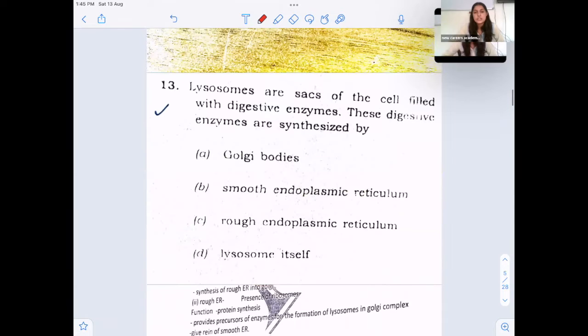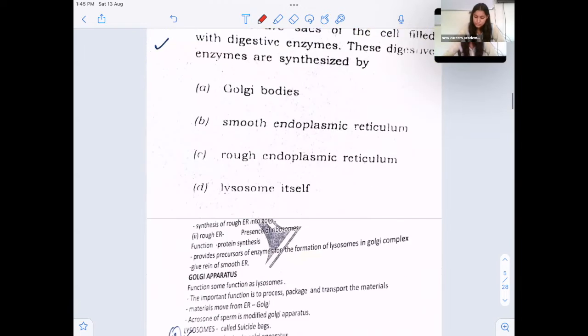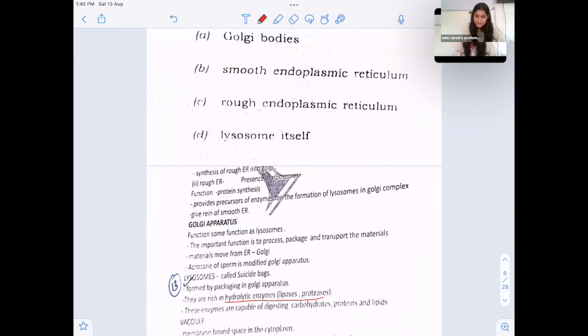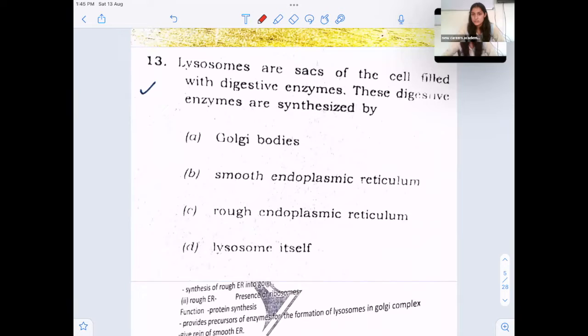Next question is, lysosomes are sacs of the cell filled with digestive enzymes. These enzymes are synthesized by. We know that lysosomes, they contain hydrolytic enzymes. And these hydrolytic enzymes, they are produced by Golgi bodies and then these vesicles, these hydrolytic enzyme filled vesicles, they detach in the form of lysosomes. So answer is option A, Golgi bodies.